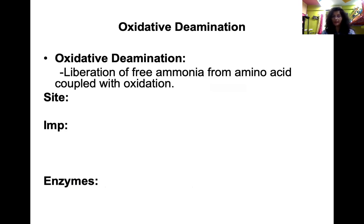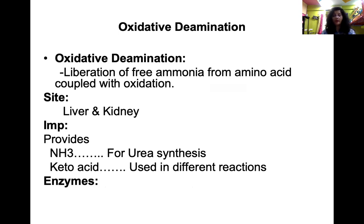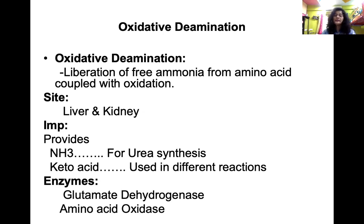Oxidative deamination is deamination coupled with oxidation. Most oxidative deamination occurs in the liver and kidney. Its importance is that it provides ammonia for urea synthesis and provides keto acids for various reactions. Two main enzymes cause oxidative deamination: glutamate dehydrogenase, the main enzyme, and amino acid oxidases.